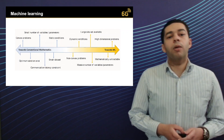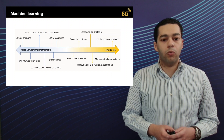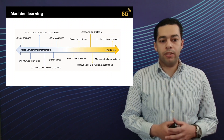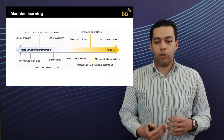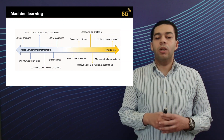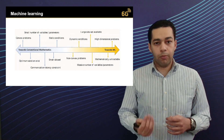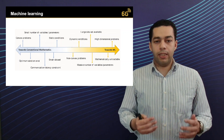A question that might come to mind here is when to apply machine learning and when to apply conventional model-based mathematical approaches. Conventional mathematical tools are more feasible when there are convex problems, a small number of variables, small number of parameters, static conditions, and small data sets. Meanwhile, it is more feasible to apply machine learning for high-dimensional problems which are mathematically intractable, for problems with dynamic conditions and massive numbers of variables, and when there exist large data sets.